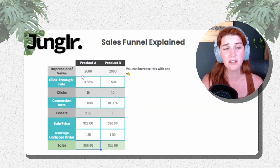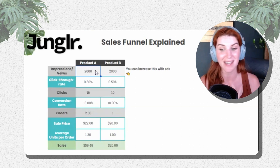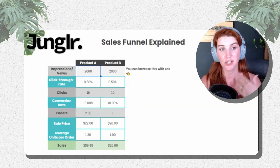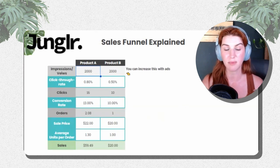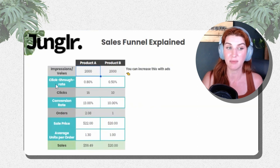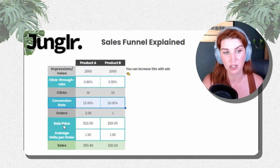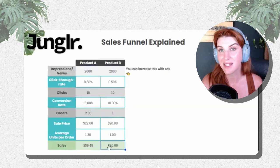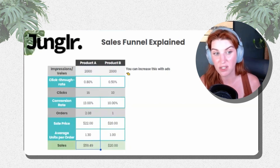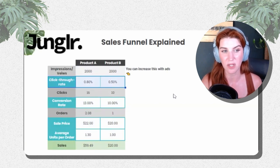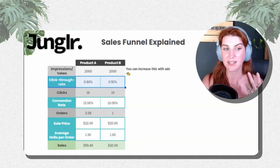All of a sudden, with the same 2,000 people viewing our listing — probably running the same ads, showing up in the same places, without even increasing rankings — all we did was optimize our choke points, not even very significantly, just a little bit. For those same 2,000 impressions we went from making $20 to $59 and change with just a few small tweaks.